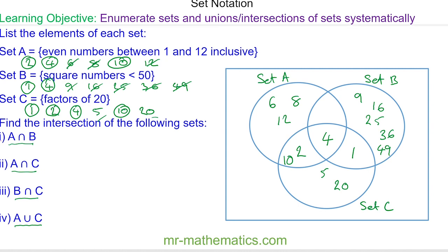Okay, so for A intersecting with B, we have this region here, and you can see that has one element of 4. A intersecting with C, we have this region here, which is 2, 4, and 10.